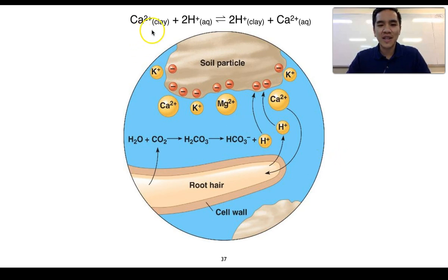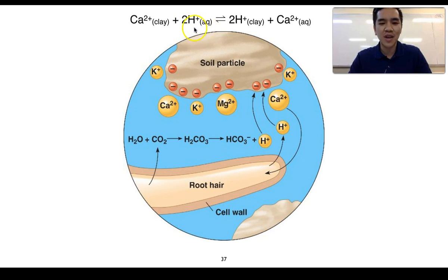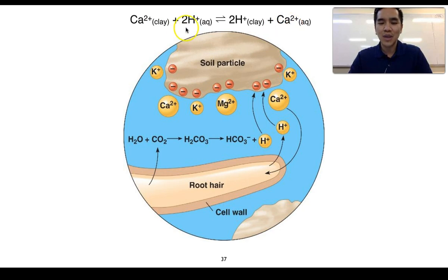The same process can be explained using an equilibrium reaction where calcium and hydrogen ions are in equilibrium between the clay and the soil water. When plants release carbon dioxide they ultimately increase the concentration of hydrogen ions in the soil water. The equilibrium shifts to the right to offset this stress, resulting in more hydrogen ions adsorbed onto clay and more calcium ions moving from clay into solution. This cation exchange makes calcium ions available in the soil water, where they can be absorbed by root hair cells.